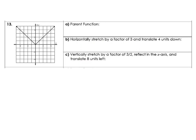For this one it looks like our parent function is the absolute value of x, so f of x is the absolute value of x. Now we need a horizontal stretch by a factor of 3. So just like the previous one, we are going to have to put that on the inside, and we have to look at that reciprocal. If I want to do a horizontal stretch of 3, I need to put a 1 third on the inside of the function. And then it wants us to translate 4 units down, so we're going to subtract 4.